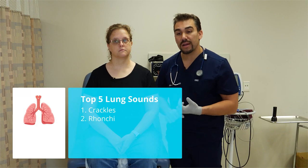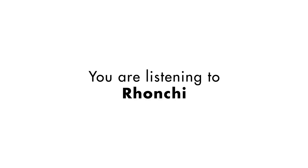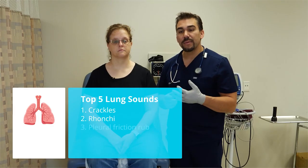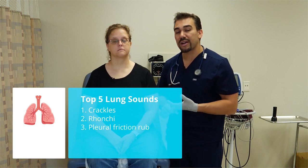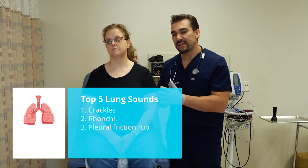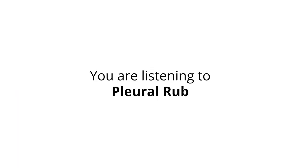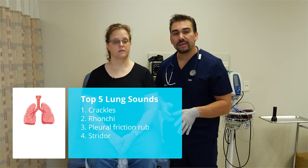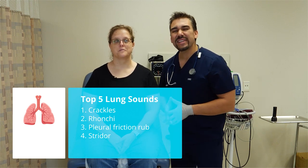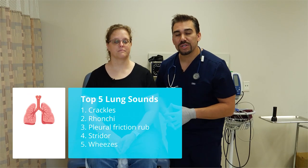Number two, rhonchi. Number three, pleural friction rub — I call it pebble friction rub because it sounds like two pebbles being ground together. Number four, stridor — a squeak that sounds like a squeaky door or squeaky toy. And number five is wheezes, which we call the wheezy whistle.